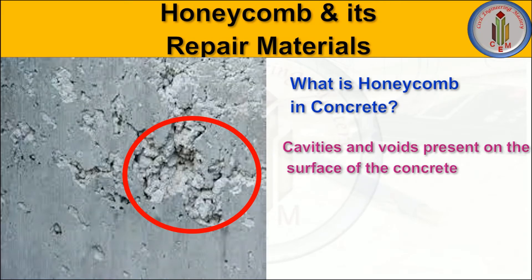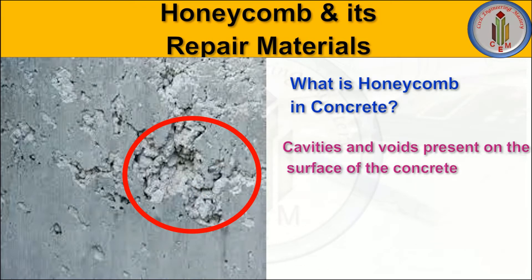First, what is honeycomb in concrete? Honeycomb in concrete is created by cavities and voids present on the surface of the concrete. As seen in the picture, the cavities and voids present on the surface of the concrete are called honeycomb. We call it honeycomb because the cavities and voids present on the concrete look like a bee nest — that is why the name comes as honeycomb.